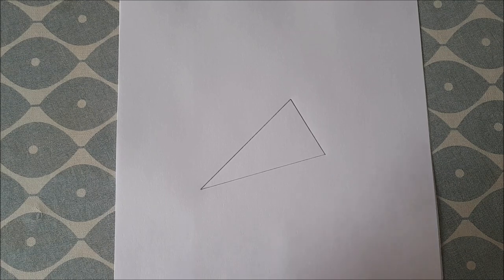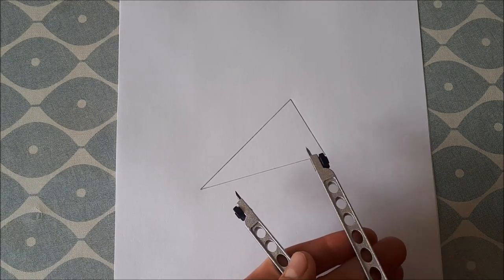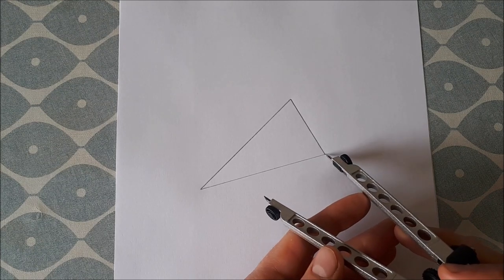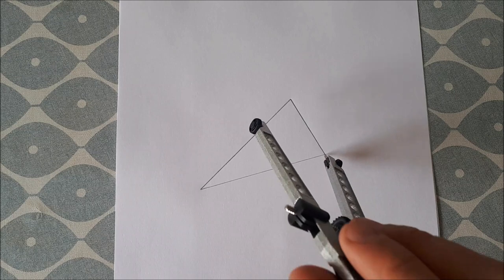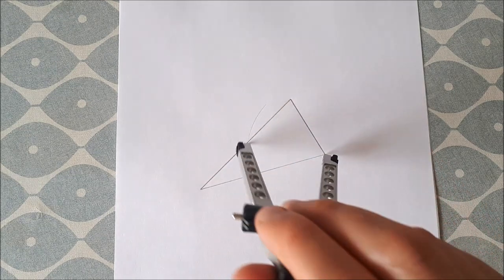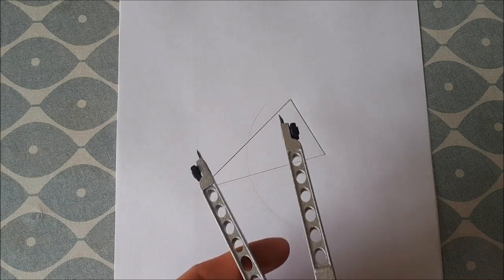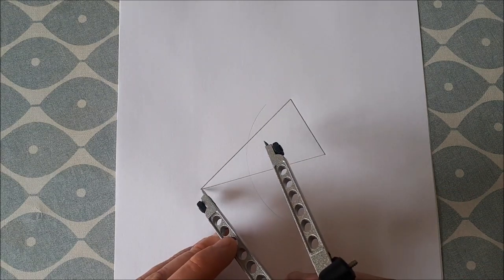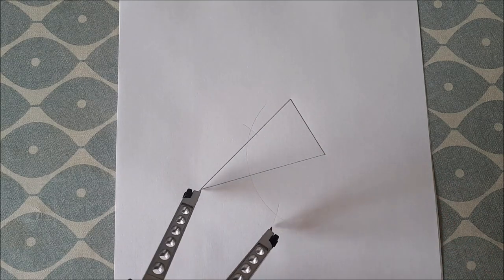So let's start by bisecting one of the lines. So we use our compass. Set your compass to over halfway, put the tip of your compass on one of the vertices and scribe an arc. Move your compass, keeping the same width, to the other vertex and scribe your arc like this.